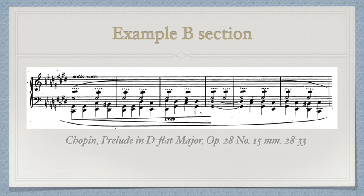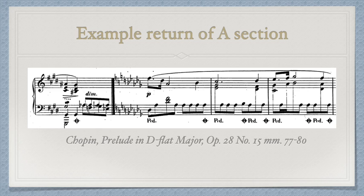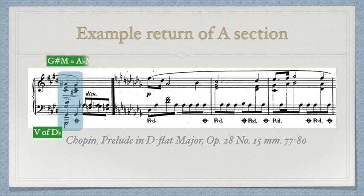It continues in this way until a cadence, which leads us back to the A section. The half cadence on G-sharp major right before the double bar is enharmonically the dominant of Db major, which is also re-spelled as an Ab major chord. So with a short lead-in, we're back to our sweet and melodious Db major once again until the piece closes.